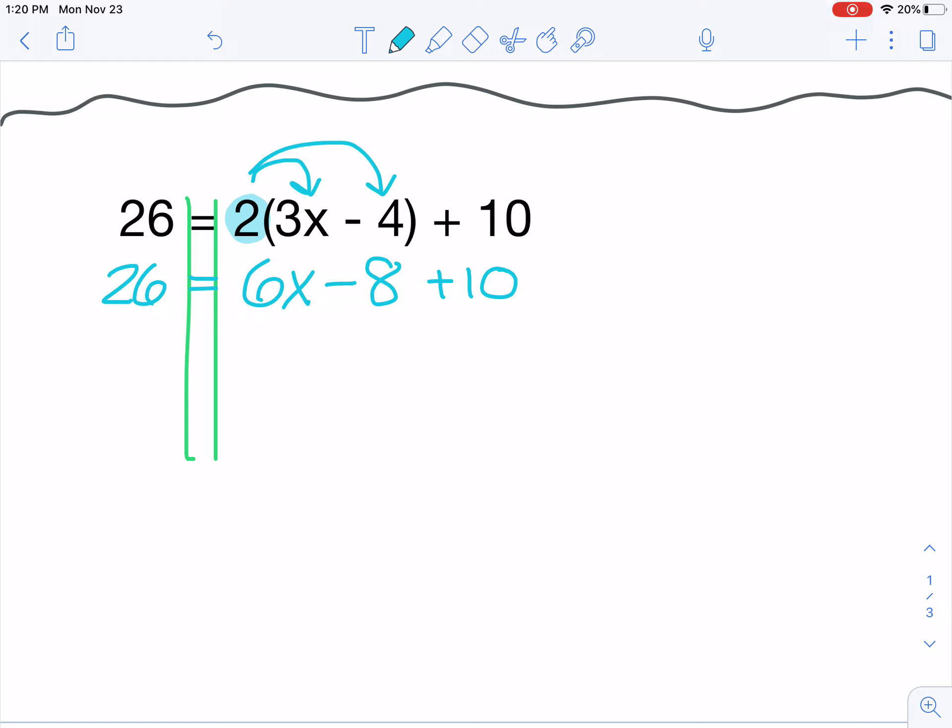The next thing I need to do is look if I need to combine any like terms. In this case, I do have two like terms. I have a minus 8 and I have a plus 10. Those are both constant terms, terms with no variable. So if I take negative 8 and add 10, I'm going to be left with a positive 2. You can always use your calculator just to make sure that your symbol is correct. I'm going to move down my 6x and move down my 26. So my new equation says 26 equals 6x plus 2.